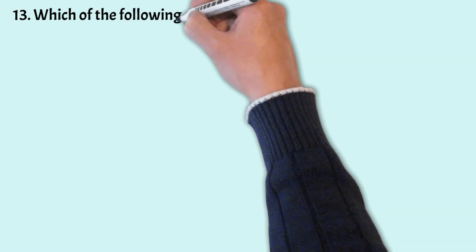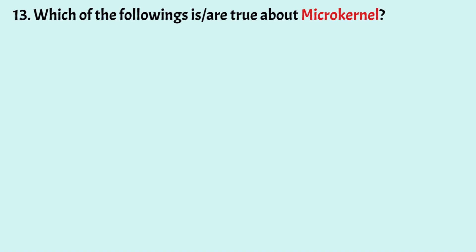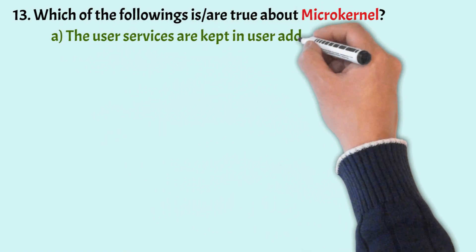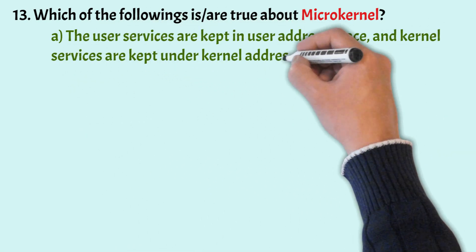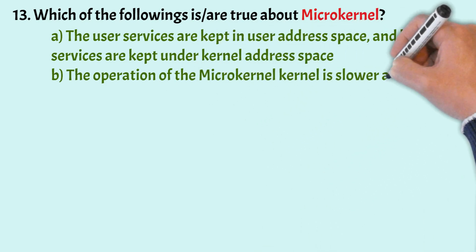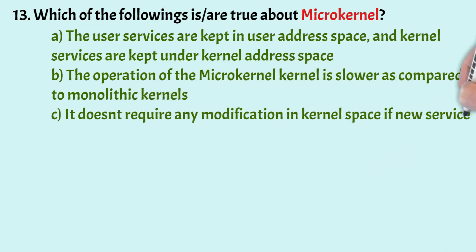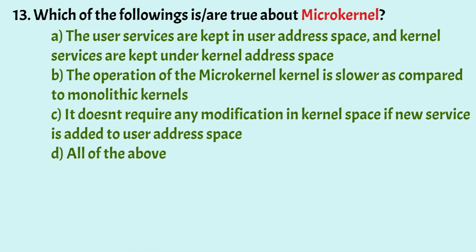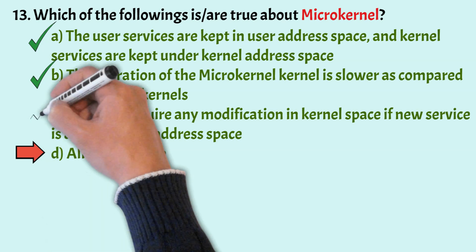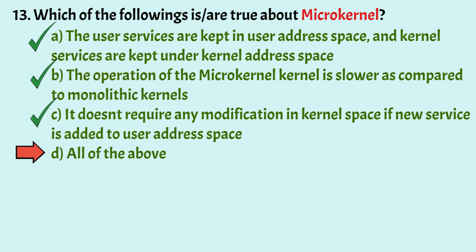Which of the following is true about microkernel? Options: user services are kept in the user address space and kernel services in kernel address space; the operation of microkernel is slower compared to monolithic kernels; microkernel doesn't require modification in kernel space if a new service is added to user address space; all of the above. The correct answer is Option D, all of the above. In microkernel, user services are in user address space and kernel services in kernel address space. Its operation is slower than monolithic kernels, and no kernel modification is needed when adding services in user address space.